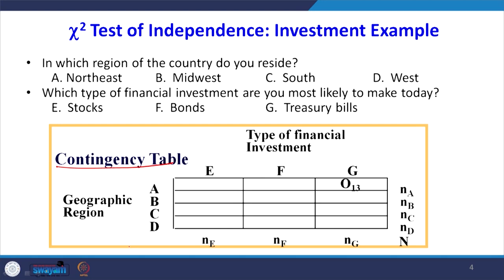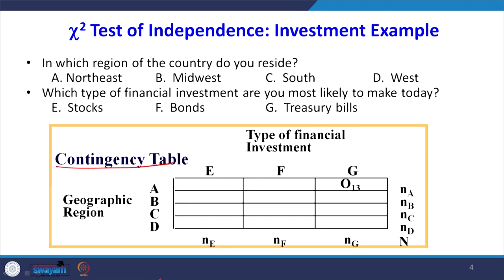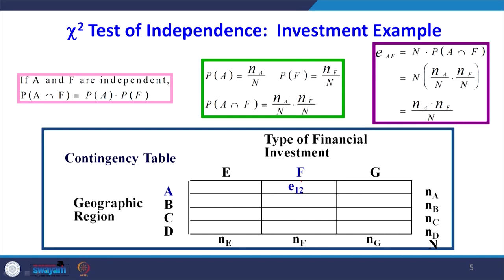The null hypothesis is that geographic region and type of investment are independent — there is no connection. The alternative hypothesis is that they are not independent — there is a dependency. This is the theory behind the test of independence. Suppose A and F are independent events, where A means belonging to the northeast region and F means willing to invest in bonds. If A and F are independent, we can write P(A ∩ F) = P(A) · P(F).